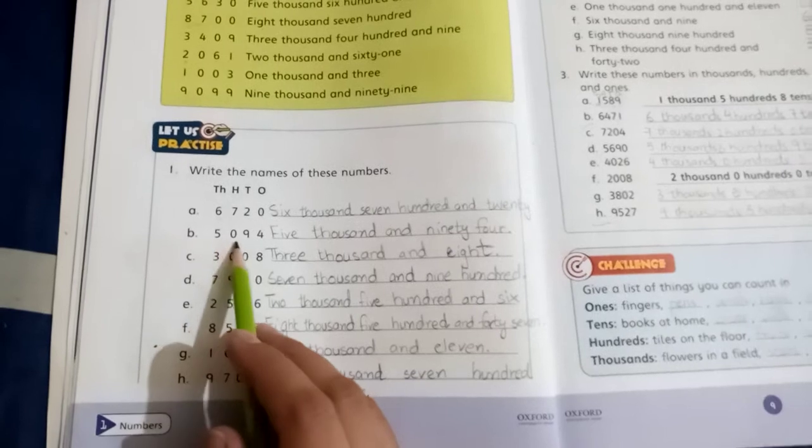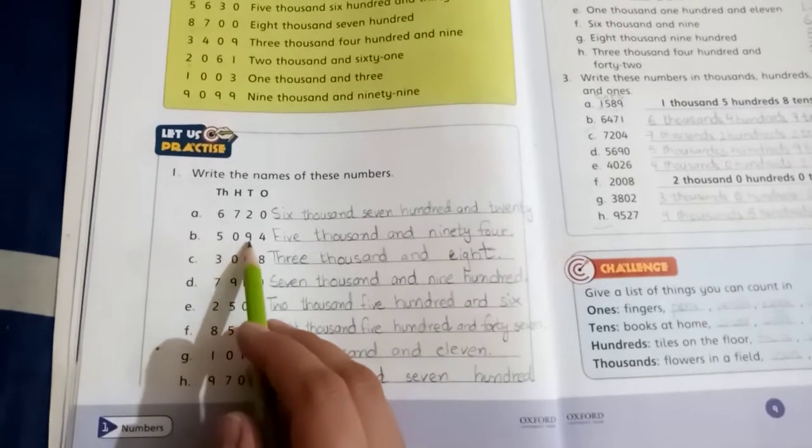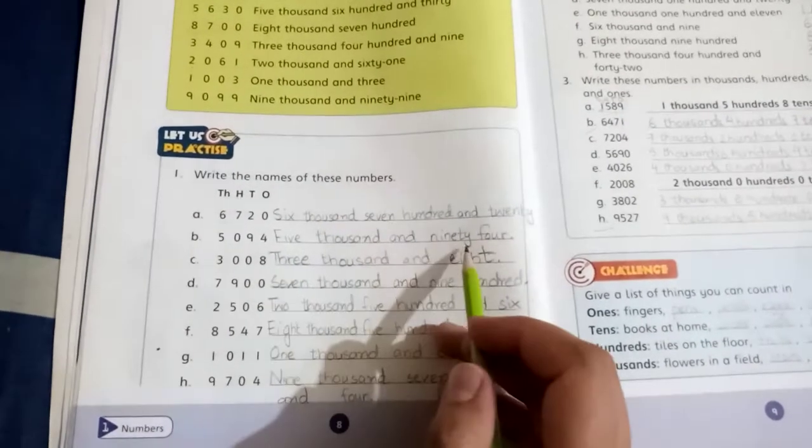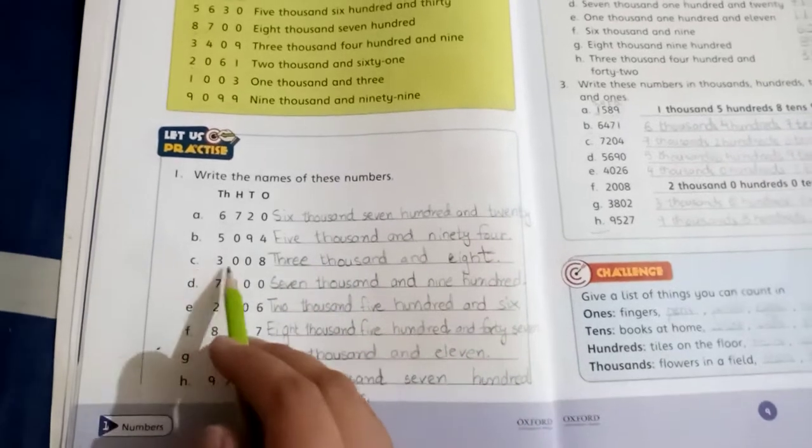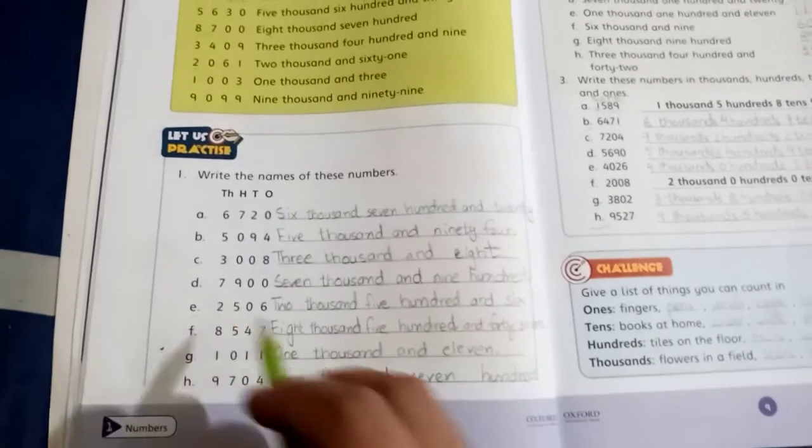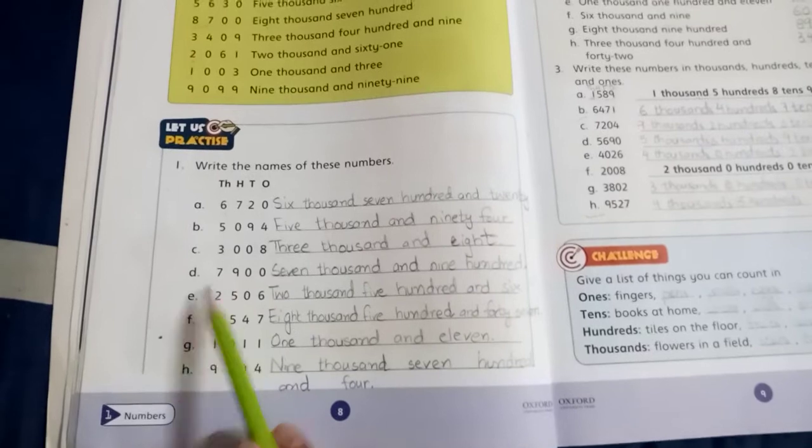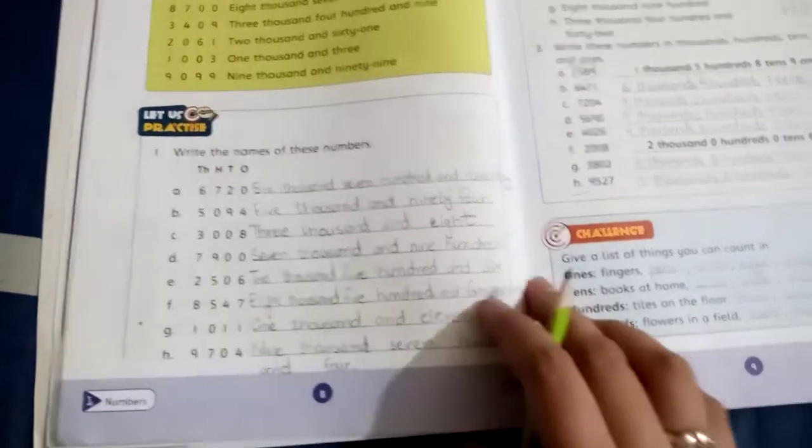B part: 5,000, there is nothing in the hundreds, and 94. You will write like this. C part: 3,008. The remaining part D to H, you will do by yourself. Come to page 9.